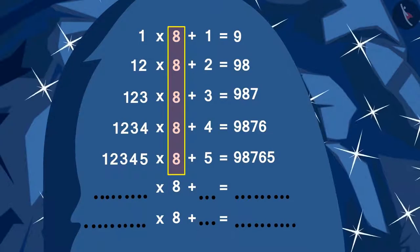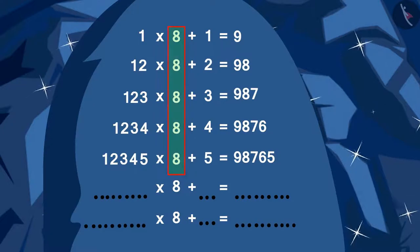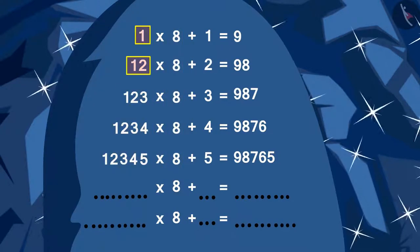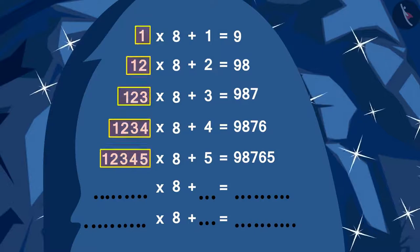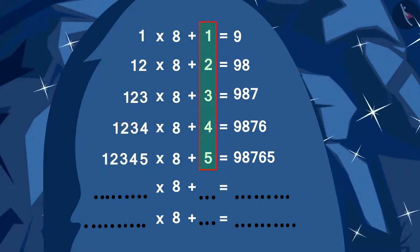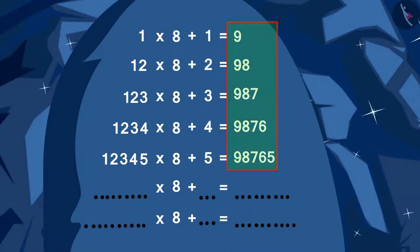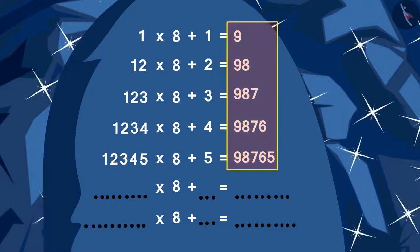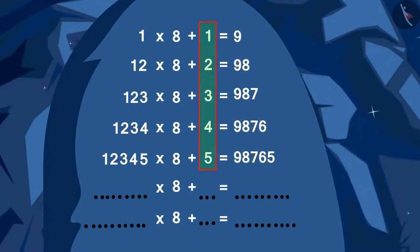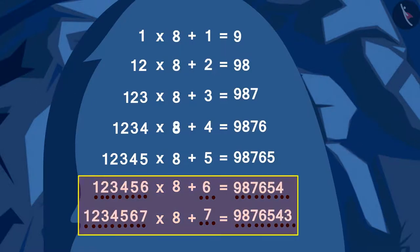Every time the number being multiplied by 8 is written as increasing number of digits. It is also the number being added after multiplication. And in the answer, the digits are written in a decreasing order matching the length of the number being added after multiplication. According to this rule, we can fill in the blanks of this number pattern in this way.